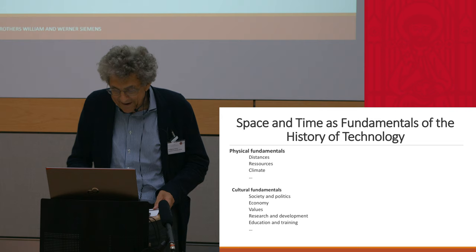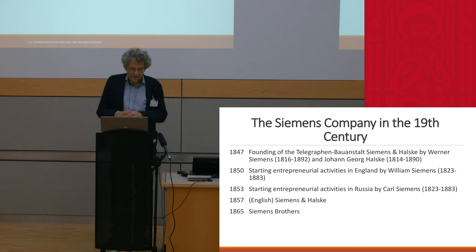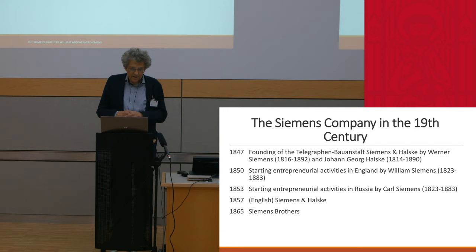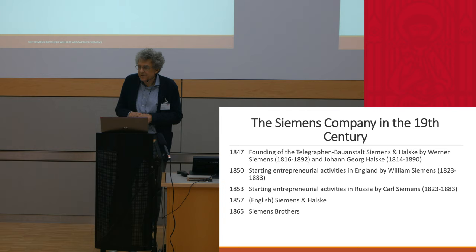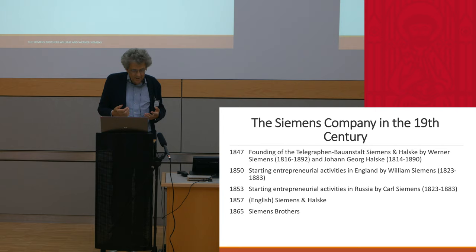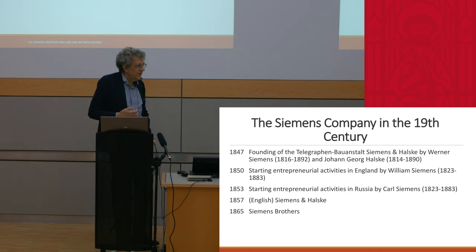Now I would like to start with my paper. I would like to give you some dates on my theme, on the Siemens company in the 19th century. The Siemens company was founded as a telegraph company by Werner Siemens in 1847 in Berlin. Some years later, Werner Siemens and his family went abroad, as he conceived the company as a family company and wanted to place his brothers at important positions.